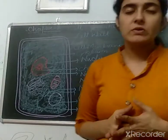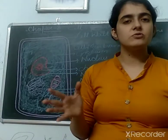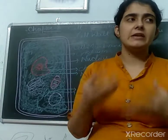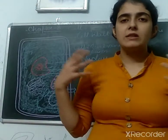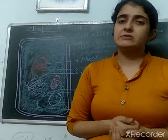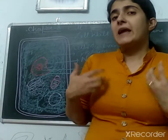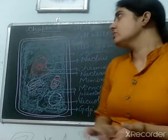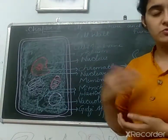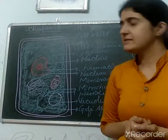Why do plants have a cell wall? Plants need to stand in an upright position and they need to bear all environmental stress. So they need mechanical strength and protection. Cell wall basically provides mechanical strength to the plant and also protects the cell from harsh climates.